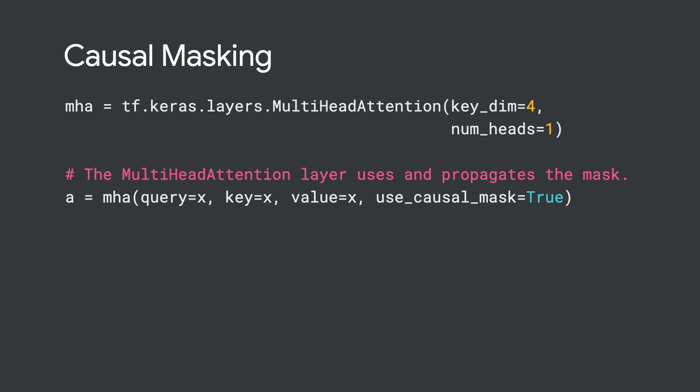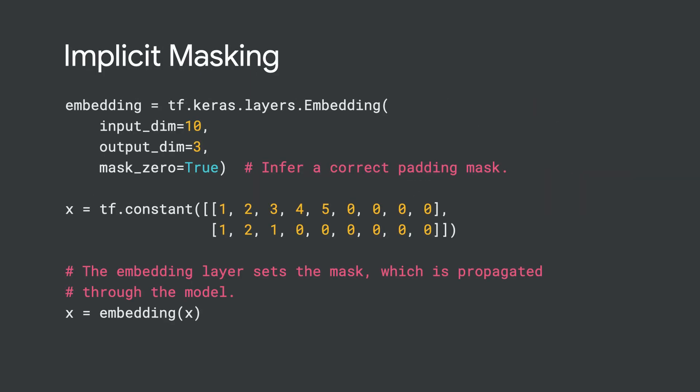We've updated our machine translation tutorial to show this layer in action, and you can find a link in the video description or search for it on tensorflow.org. The attention layers now support implicit masking too. When using the embedding layers, enable Mask Zero to ensure that any zero-padded sequences are masked automatically and the mask will be propagated through the model. You can find an example in the same tutorial.